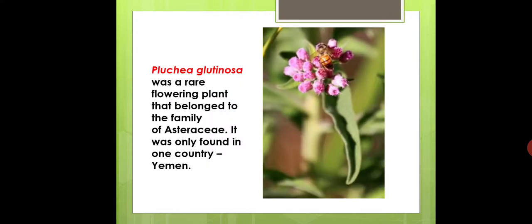Another extinct example is an angiospermic plant from the family Asteraceae — the sunflower family — called Pluchea glutinosa. It is an Asteraceae member which was found in the country Yemen. Now the plant is completely extinct.